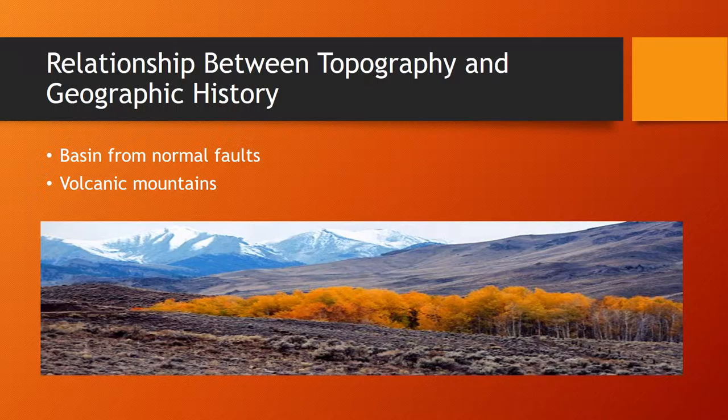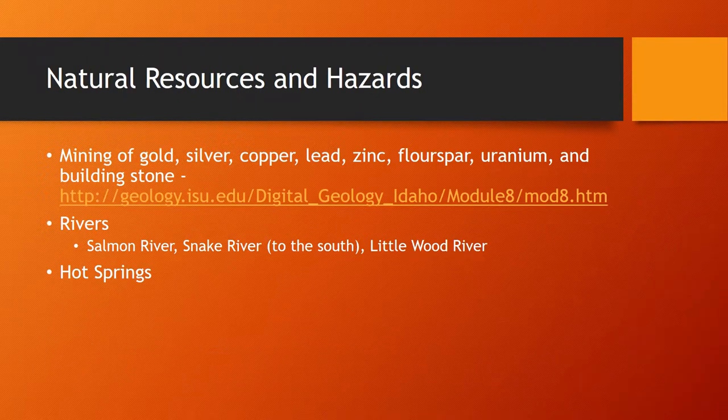Looking at how the present topography of this province relates to its geologic history, it's fairly straightforward. The whole area is dominated by volcanoes and normal faults, so you get basins from the normal faults, lots of grabens in general, and lots of volcanic mountains that have formed.